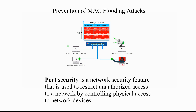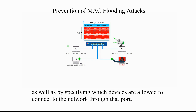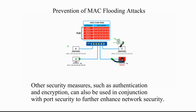Port security is a network security feature used to restrict unauthorized access to a network by controlling physical access to network devices. It is implemented by configuring switches to limit the number of devices that can connect to a specific physical port, as well as specifying which devices are allowed to connect through that port. Other security measures, such as authentication and encryption, can also be used in conjunction with port security to further enhance network security.